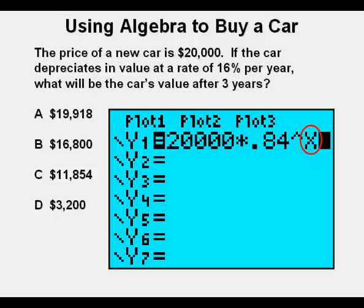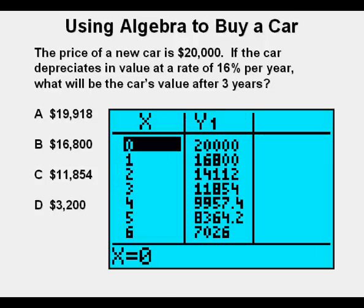Let's go to the table view and press second, then the graph key. We see a table of the value of the car for years 0 through 6. We go down to year 3 and see that the car value is $11,854. Then we choose the correct answer, C.